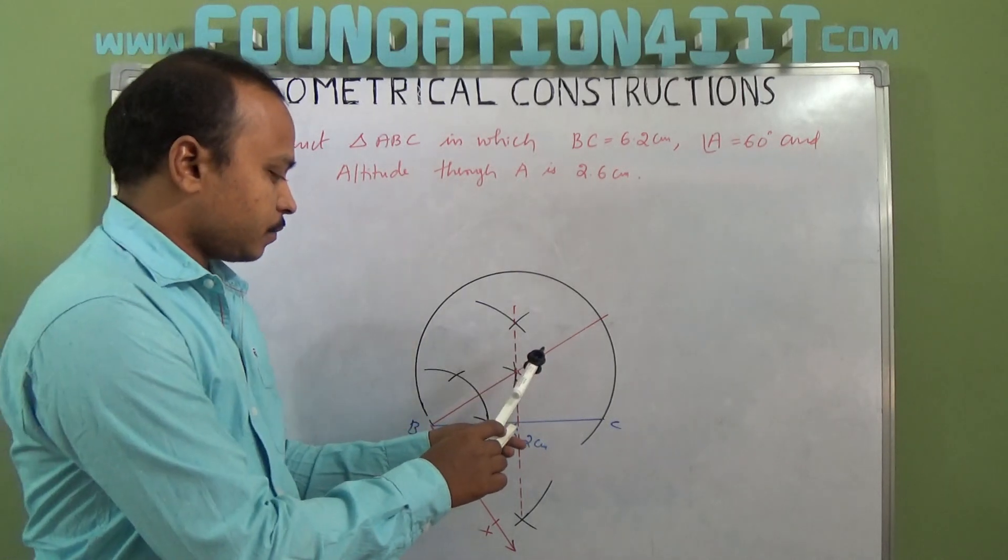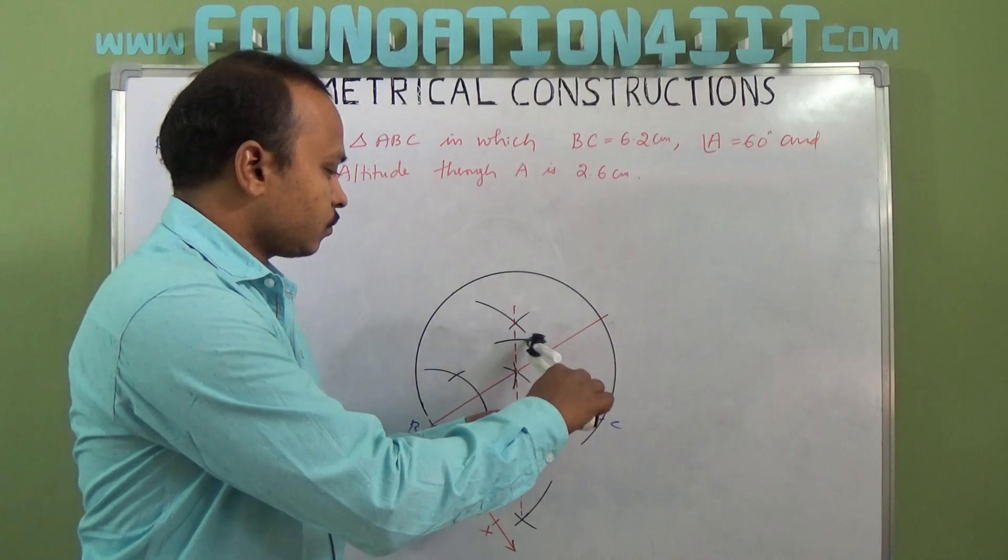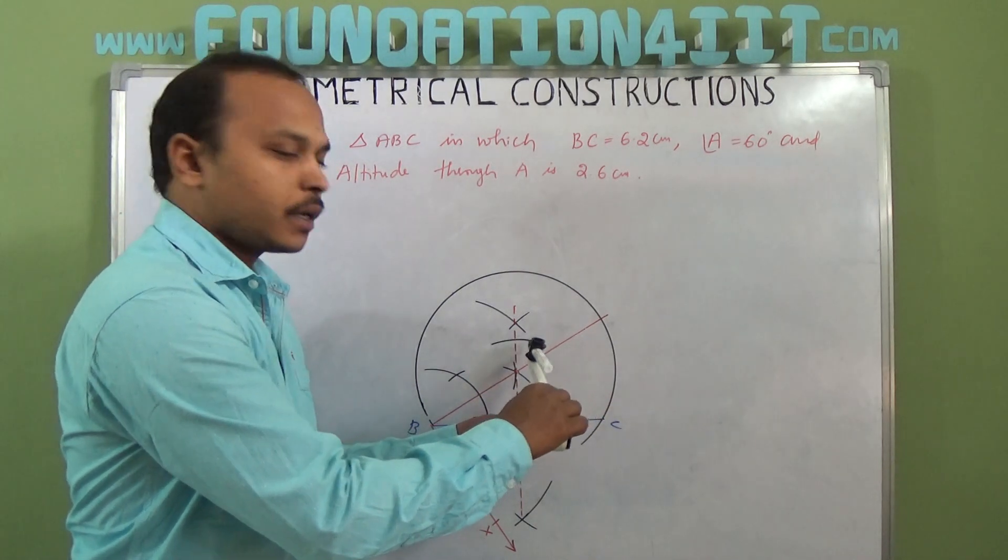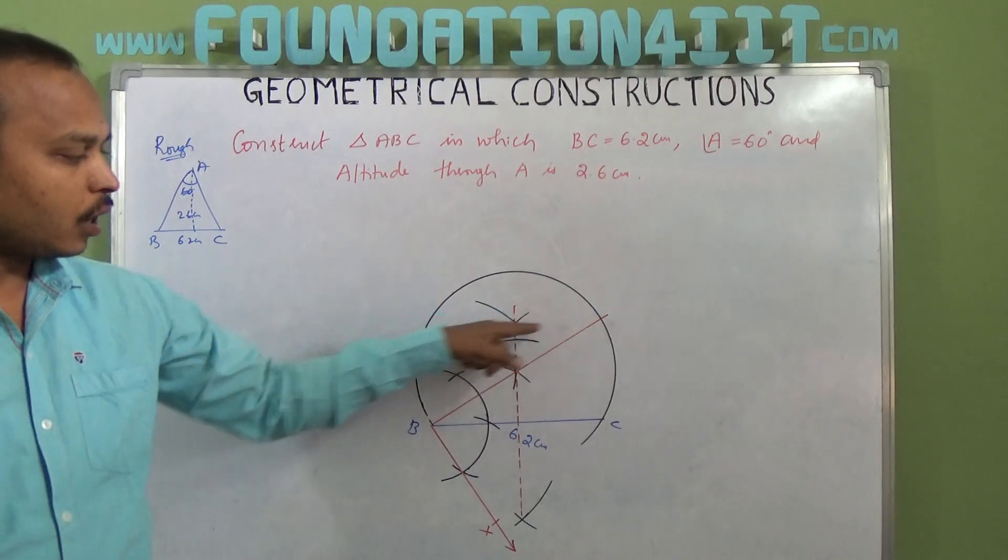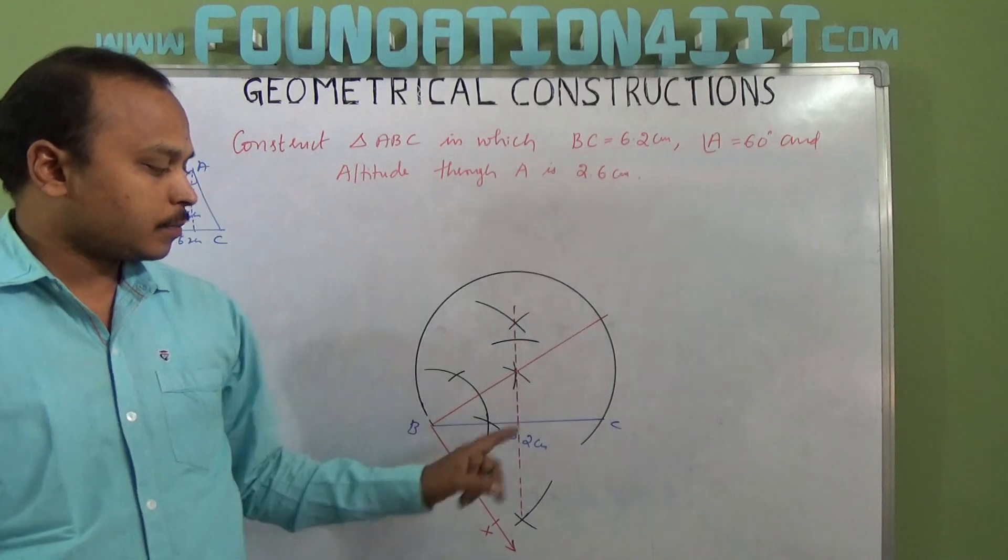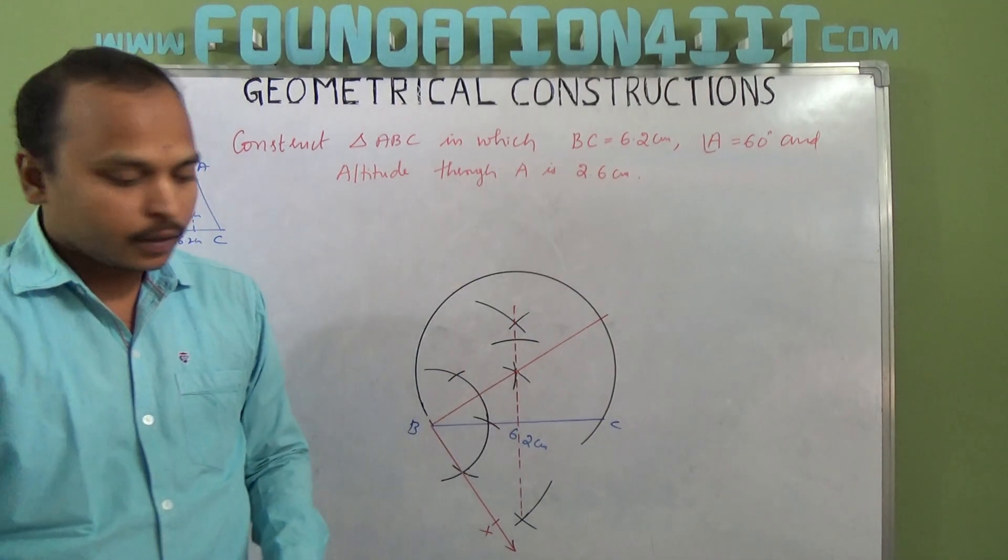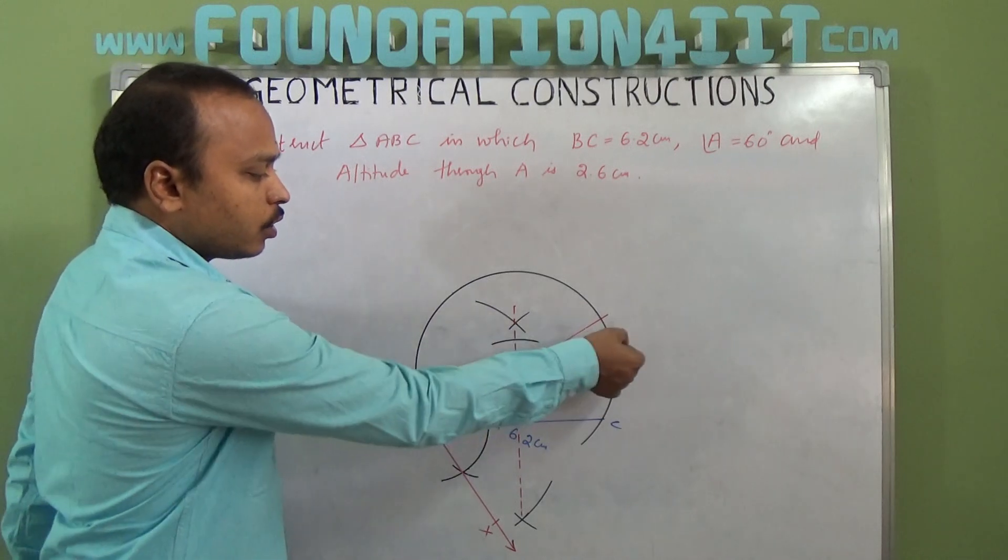Cut an arc at 2.6 centimeters, because A should be on this perpendicular line at a distance of 2.6 centimeters from BC. From here mark 2.6 centimeters. Now at this point, you should draw a parallel line to BC, or construct 90 degrees at this point.